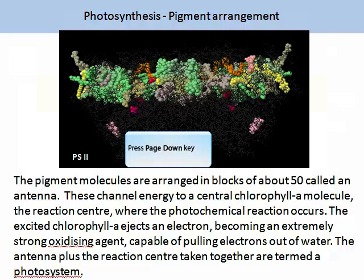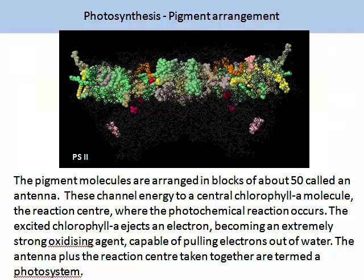The process of these photosynthetic centres is very complex. On the screen there is a model visualisation of a pigment arrangement from photosystem II. The pigment molecules are arranged in blocks of about 50 — these are the antennae. These channel energy to a centre chlorophyll A molecule, the reaction centre, where the photochemical reaction occurs. The excited chlorophyll A ejects an electron, becoming an extremely strong oxidising agent capable of pulling electrons out of water. The antennae plus the reaction centre taken together are termed the photosystem.